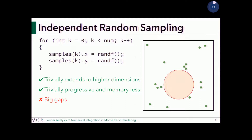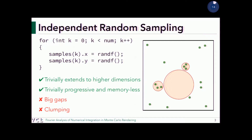The very obvious problem is there are large gaps: if a function has a peak somewhere, the samples in one realization may completely miss it, while the next realization may have three samples there giving a very high value, and the next may miss it again. The variance of your estimator will be very large — we don't want large variance. You also get clumping, which causes problems. But remember: this is still unbiased, meaning if you take several iterations you expect to get the right answer.